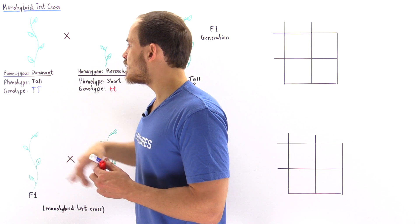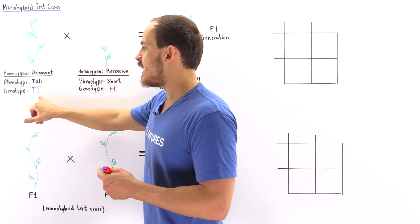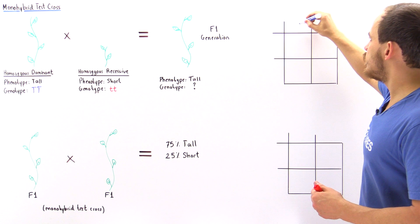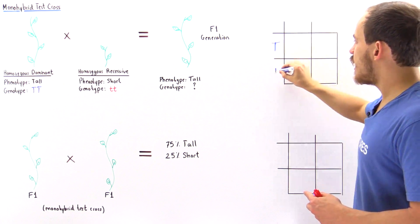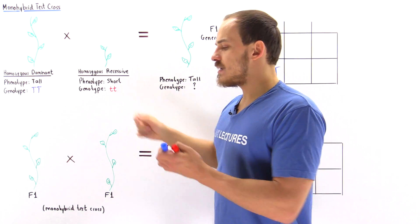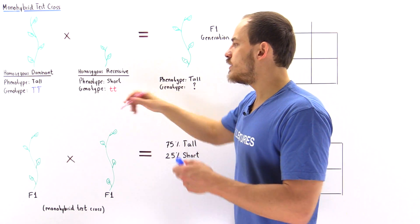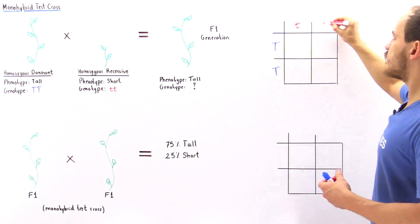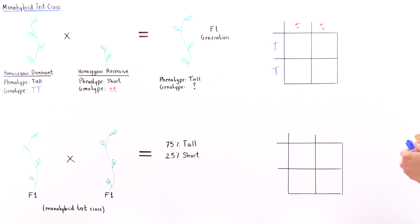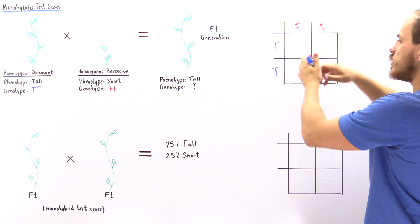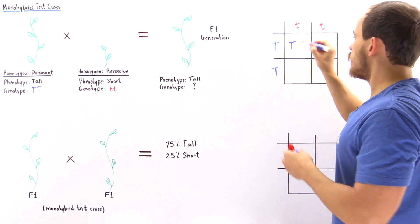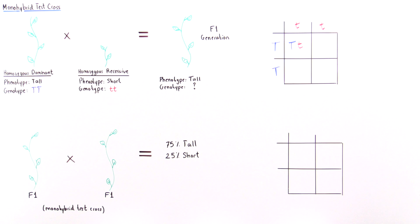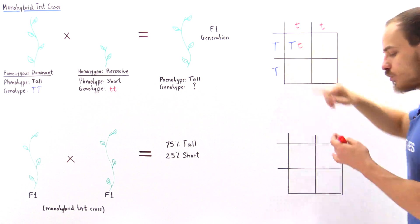Let's begin with the homozygous dominant, which means we have uppercase T, uppercase T. When we produce the gametes, the two T's separate into individual cells — so we have uppercase T and uppercase T. The other parent has lowercase t, lowercase t, and these two individual genes separate during meiosis to form the gametes. So when this mixes with this, we basically form uppercase T, lowercase t, and this type of offspring is known as a heterozygous individual — it has one dominant and one recessive allele.